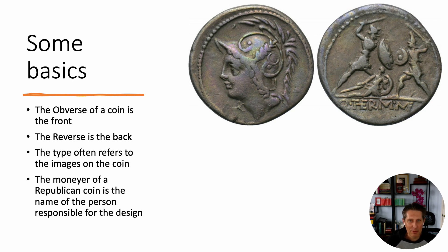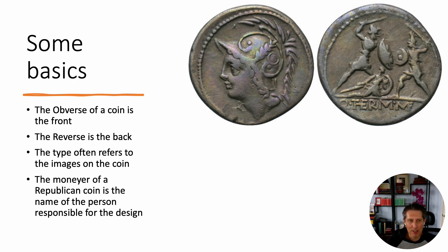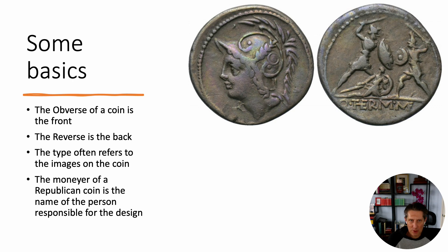The other thing that's really important for Republican coins, and particularly Republican denarii, is the moneyer. If we look at the reverse of this coin, what we see is the name of the moneyer — Quintus Thermius Minucius Felix. This is the person who, in the Roman Republic, is responsible for the design of the coin. In the Republic, there are three moneyers each year. They're given an assignment for how much money they issue, and each of them is responsible for issuing those coins.